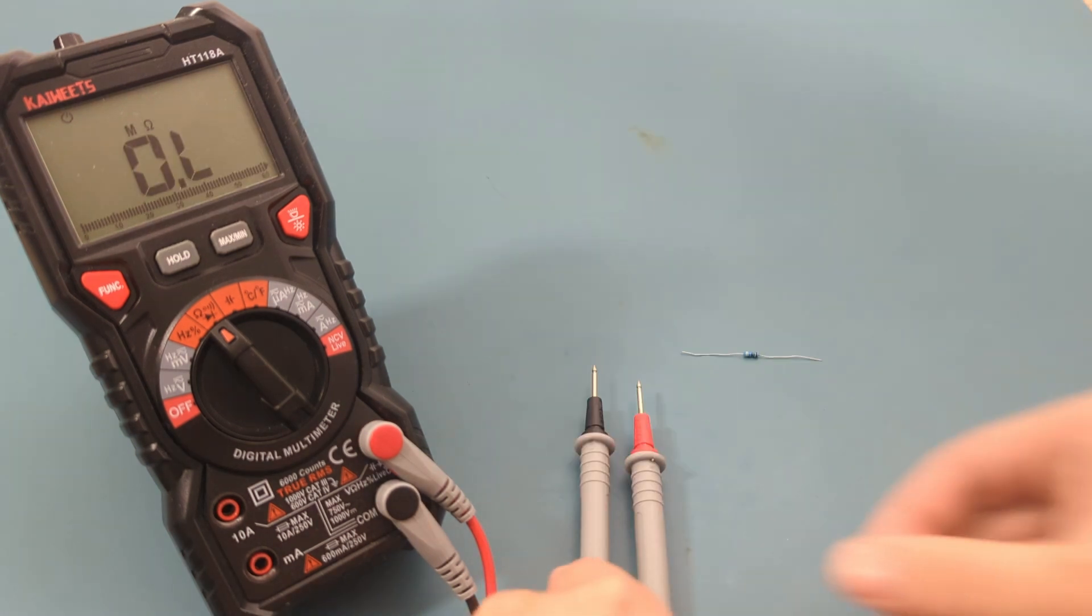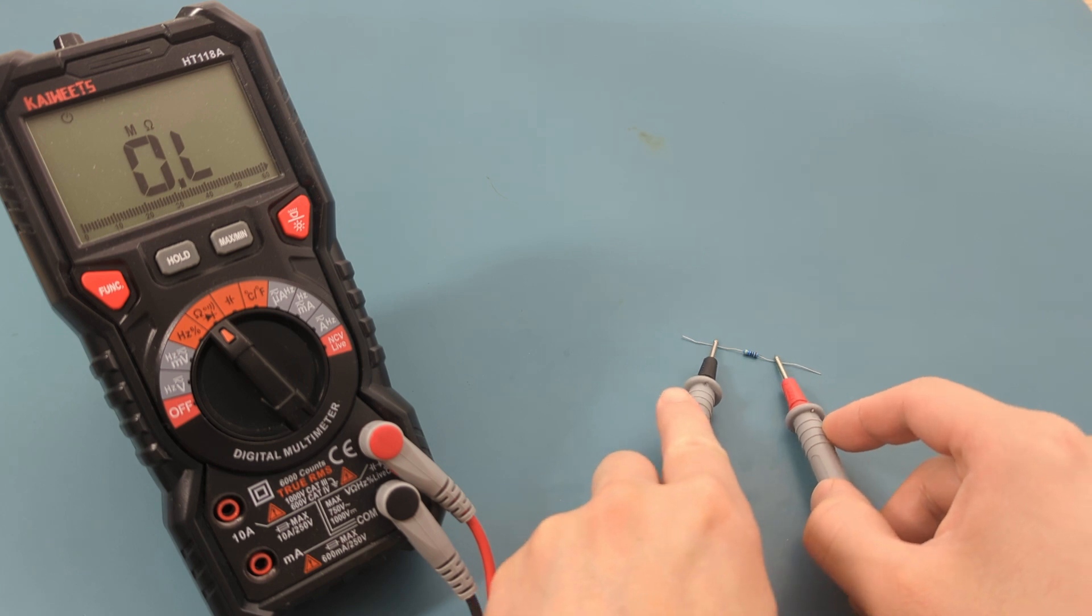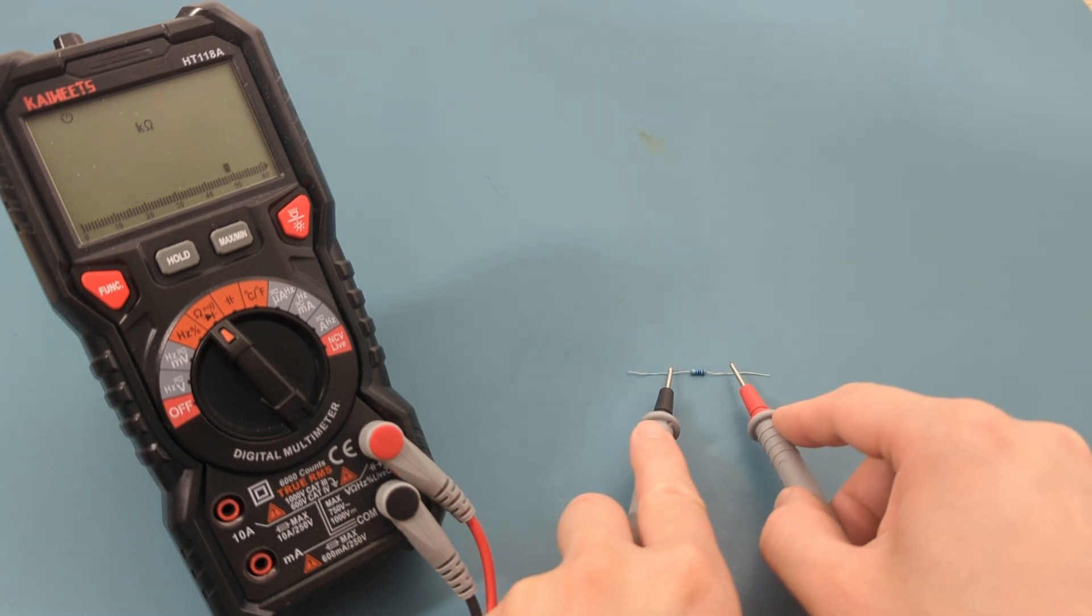This is the five band resistor, which we determined should have a value of around 470 ohms. The reading shows approximately 465 ohms, confirming that our calculation was accurate.